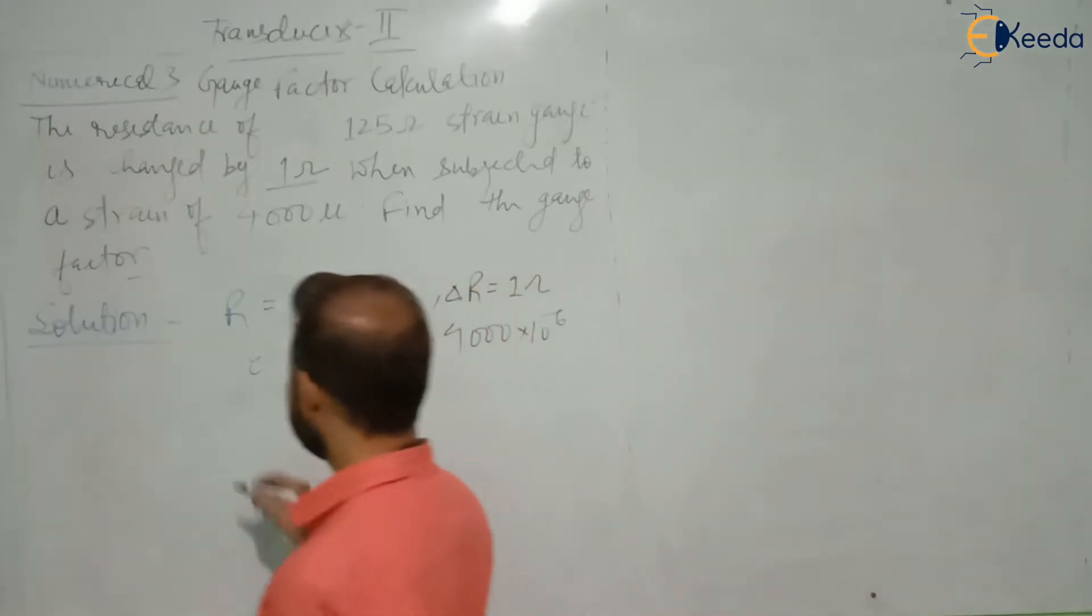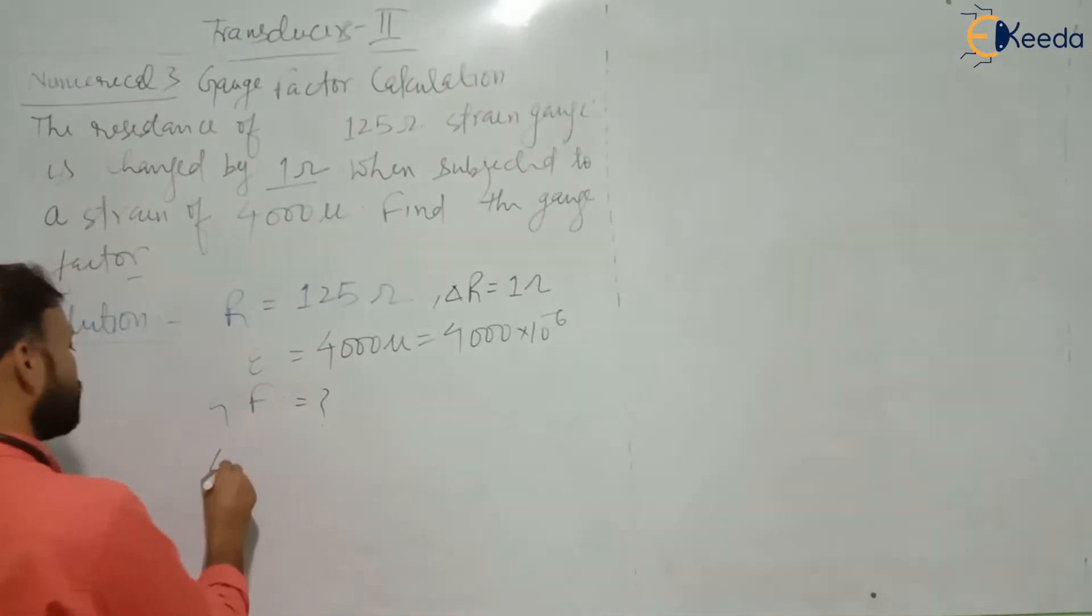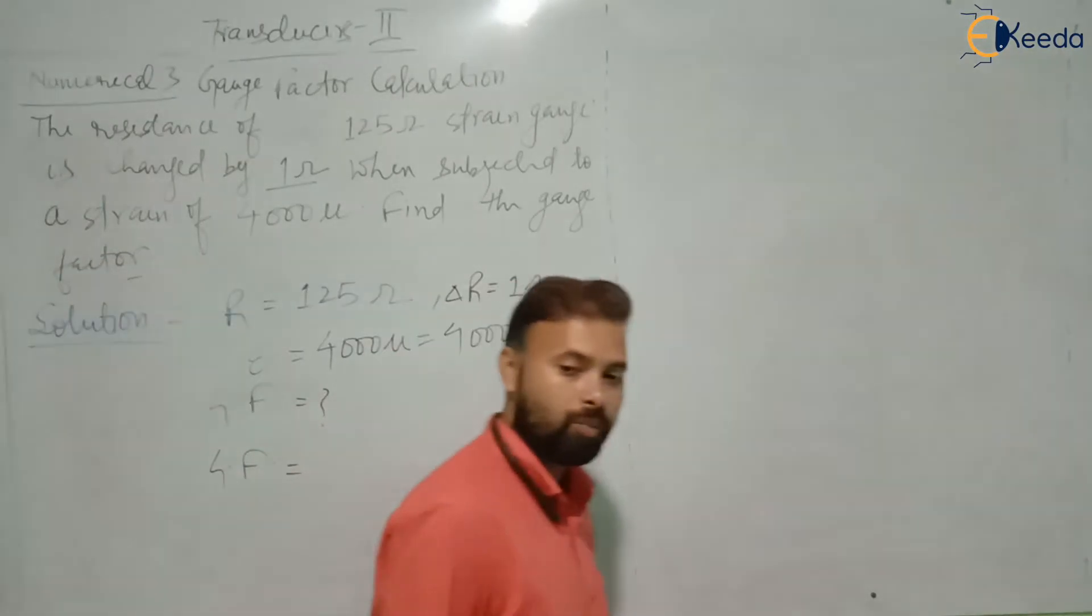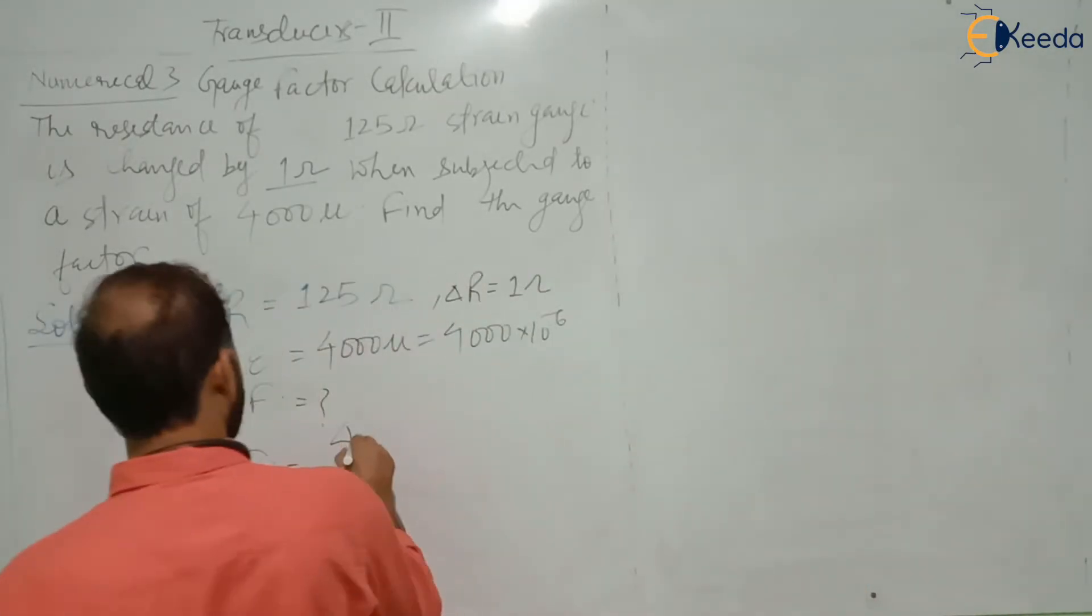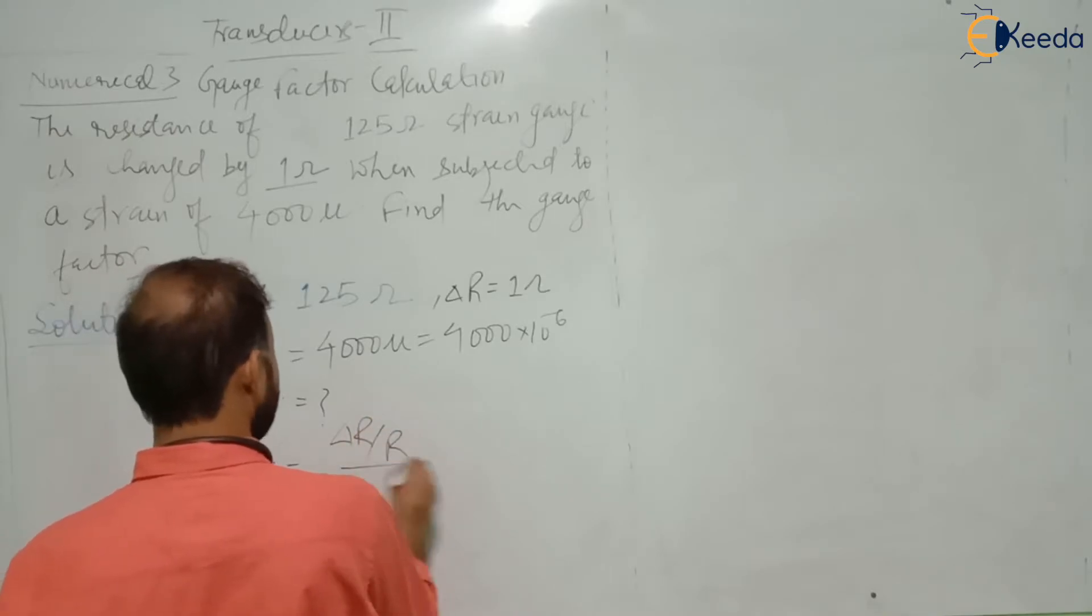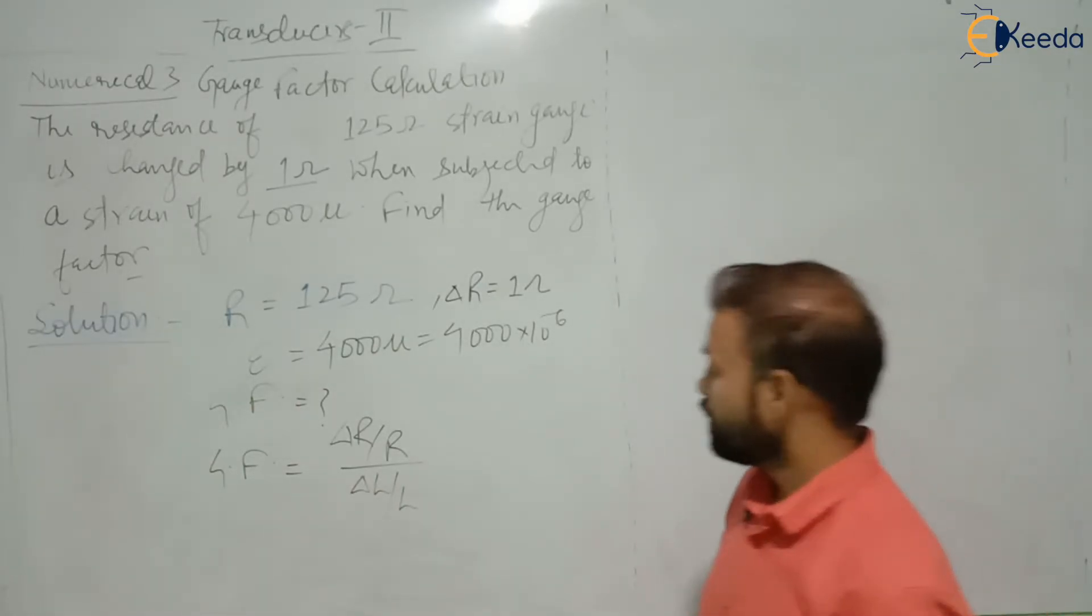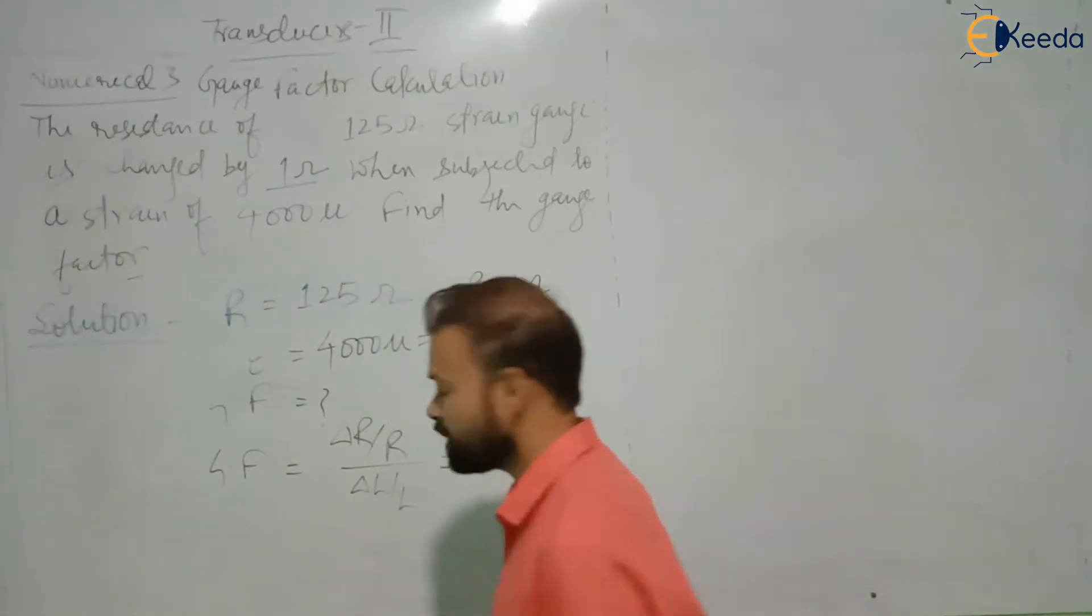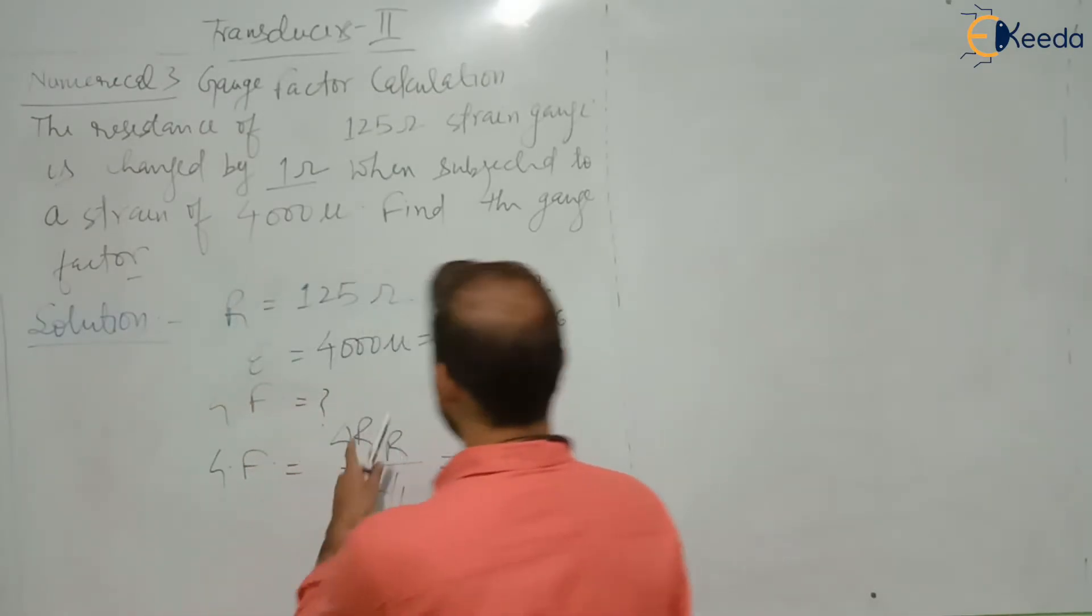Here you have to calculate gauge factor. We know that the gauge factor is nothing but delta R by R divided by delta L by L. Delta L by L is nothing but epsilon. So you have to calculate gauge factor.